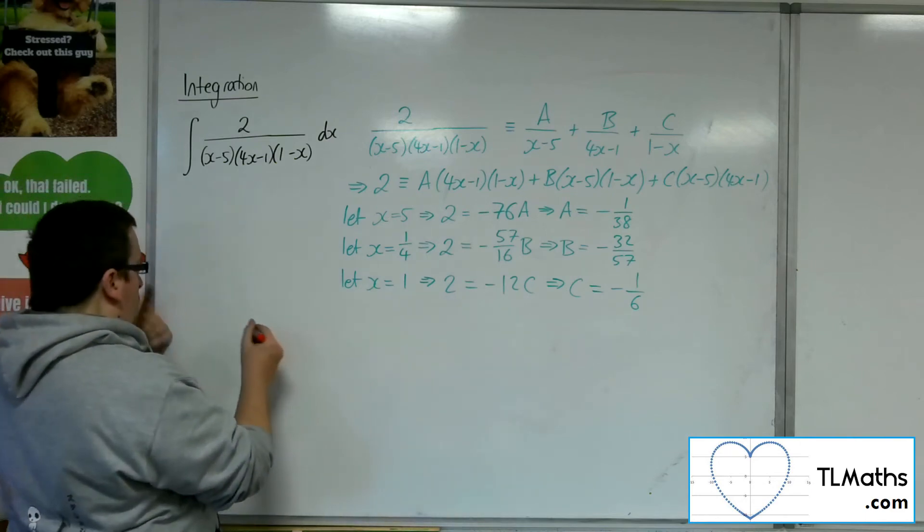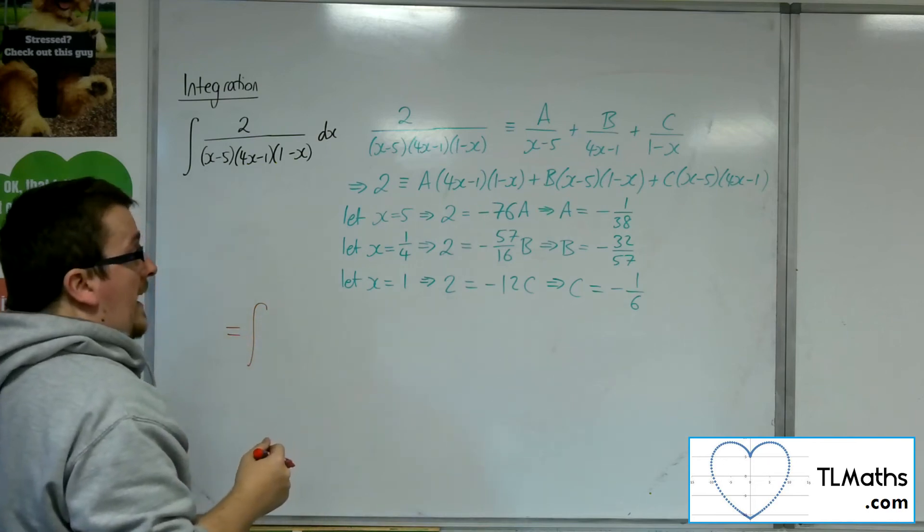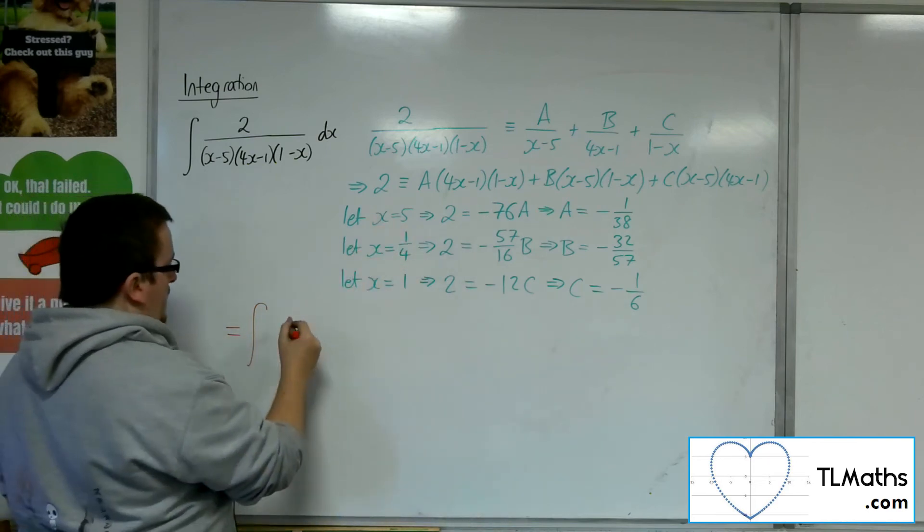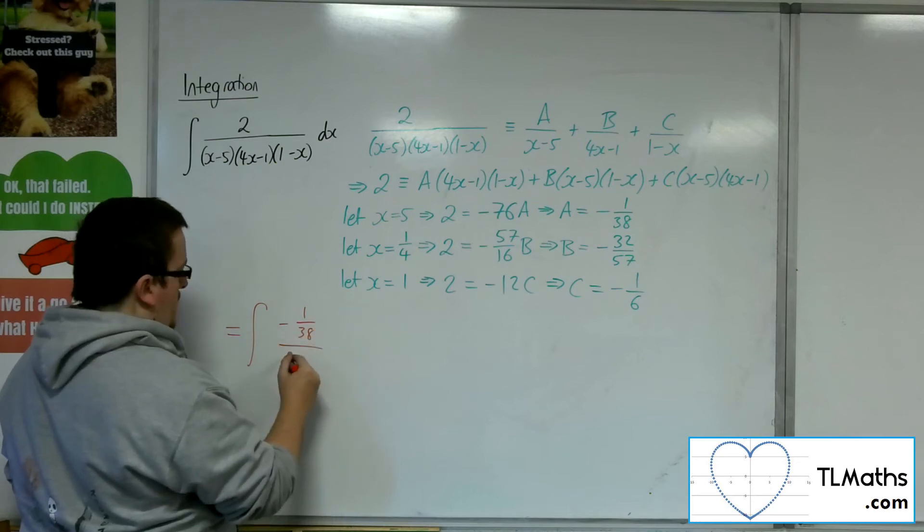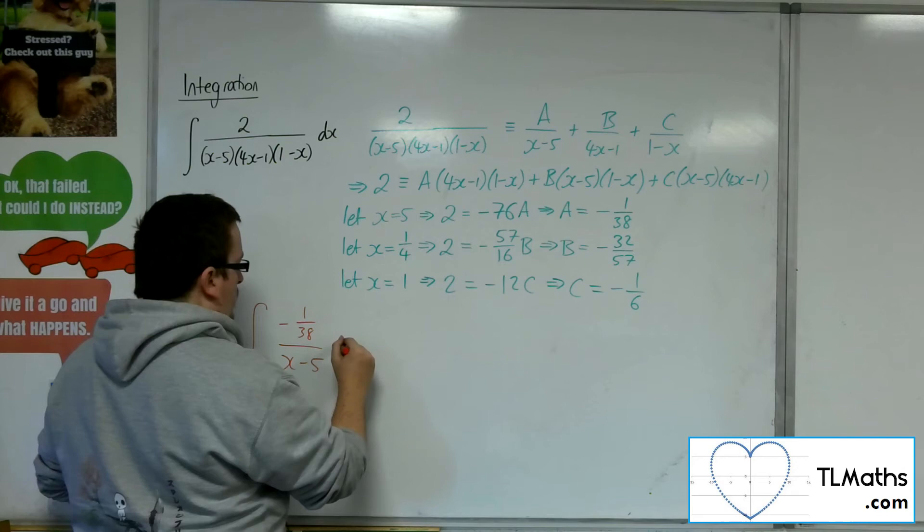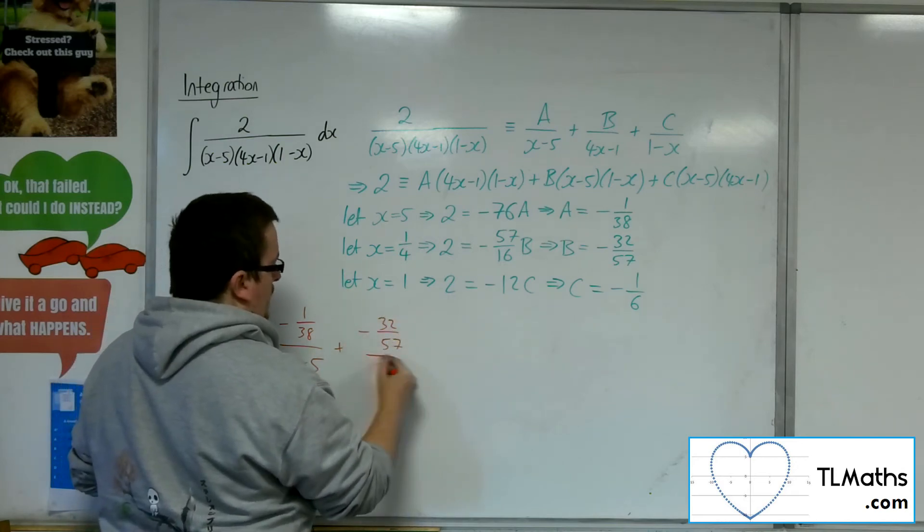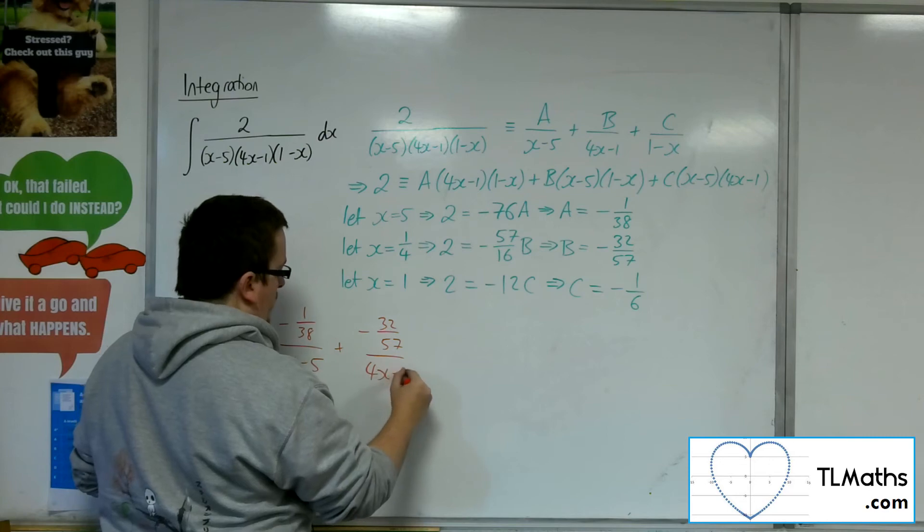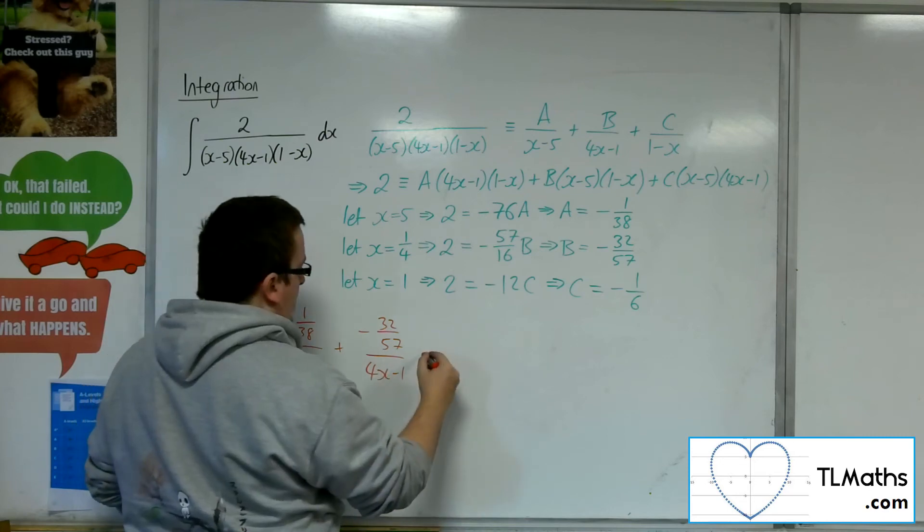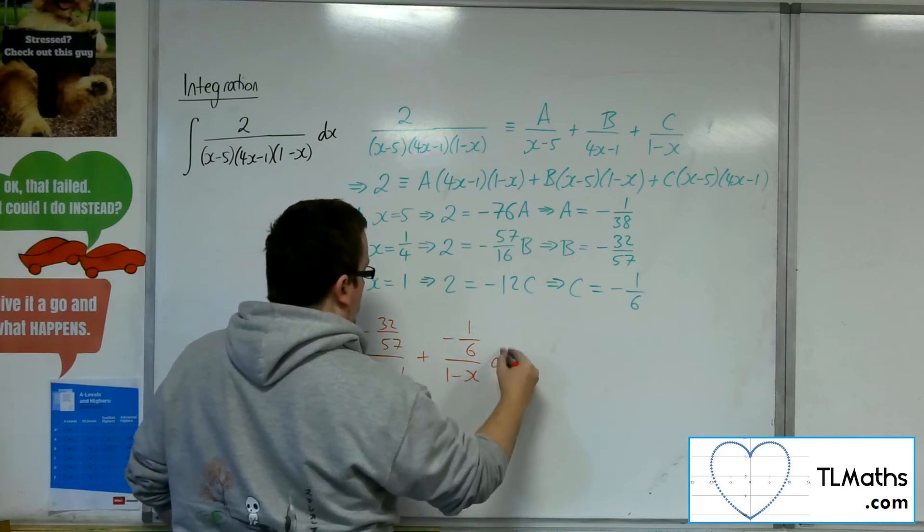So this integral can be written as -1/38 over (x-5), plus the B term (I'll write it as plus for now), and -1/6 over (1-x), dx.